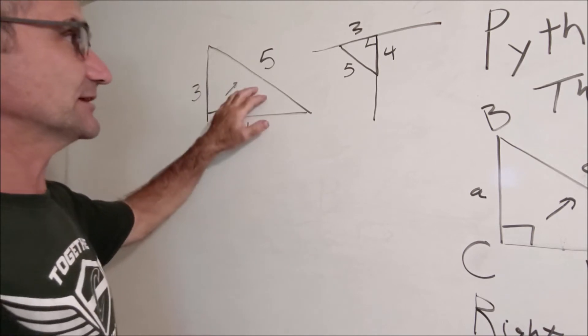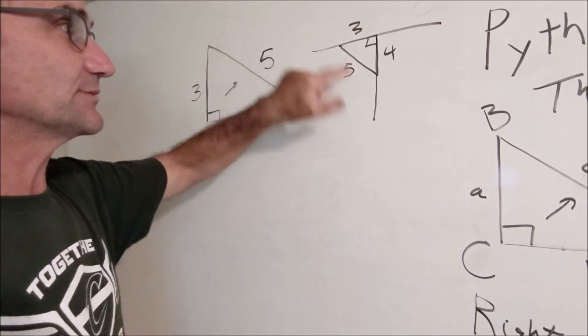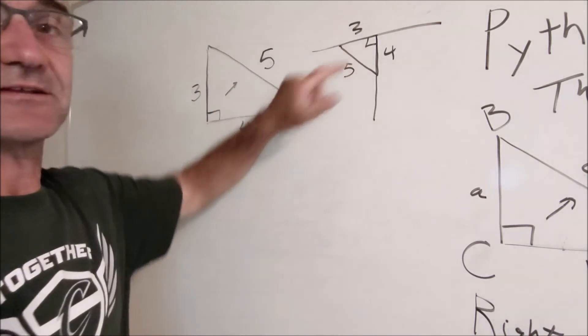So it works both ways. You can find parts of a triangle, or if you use Pythagorean Theorem and it works then it has to be a right triangle.